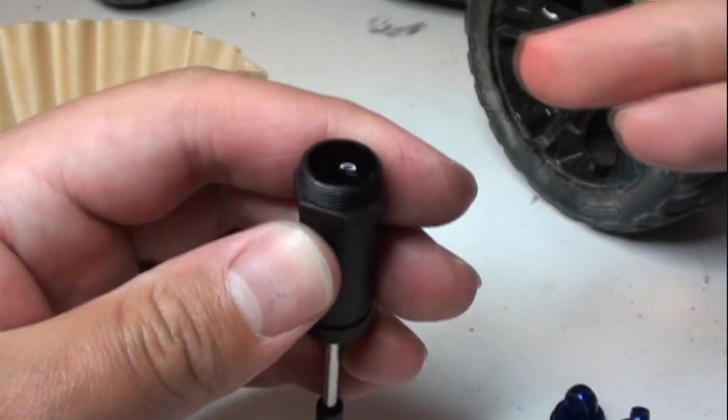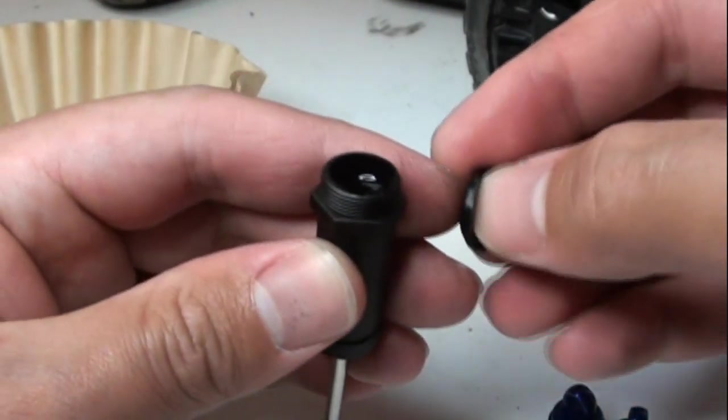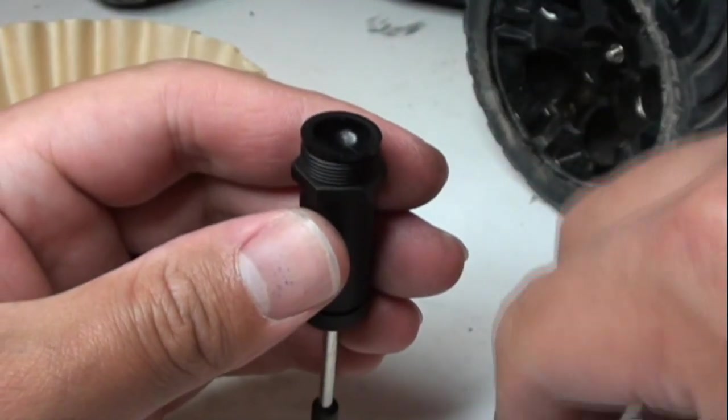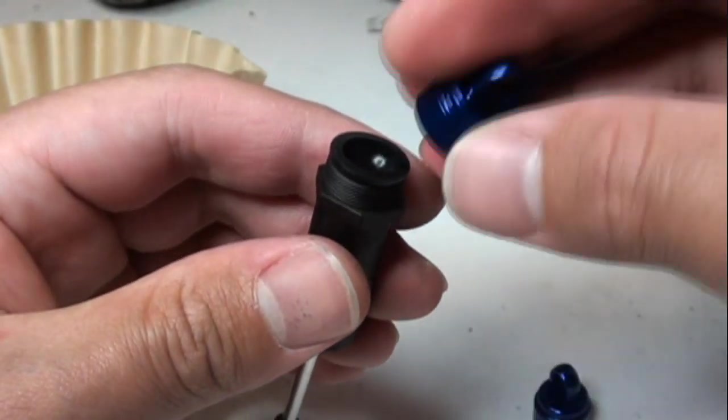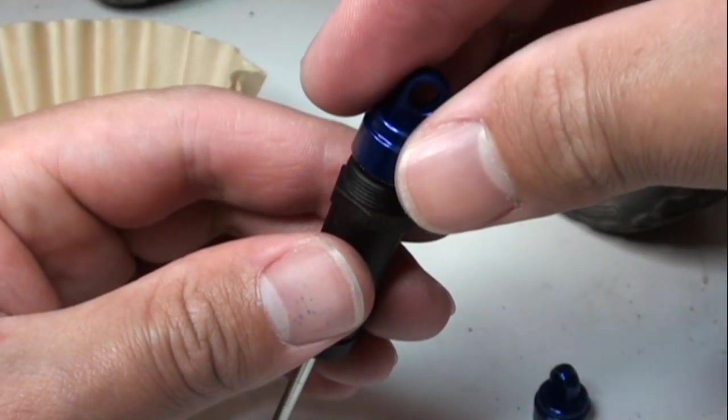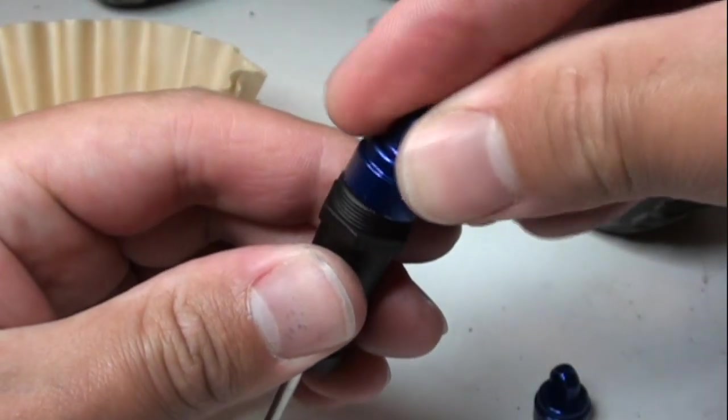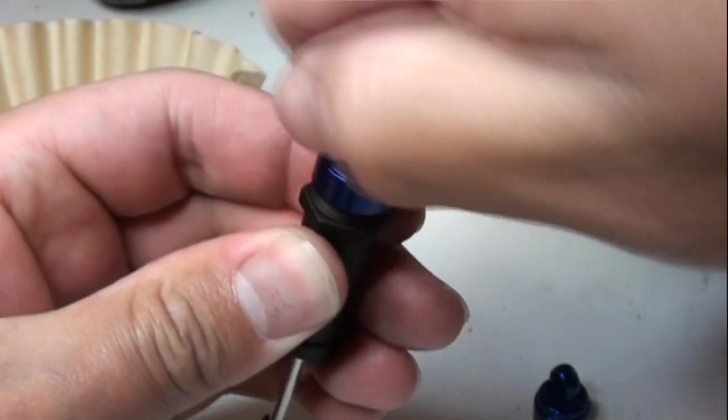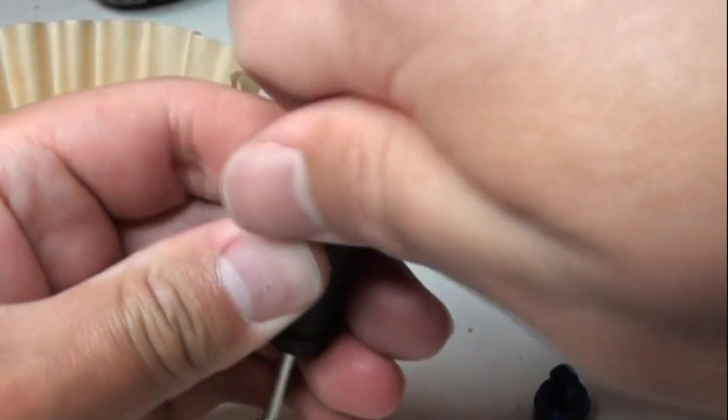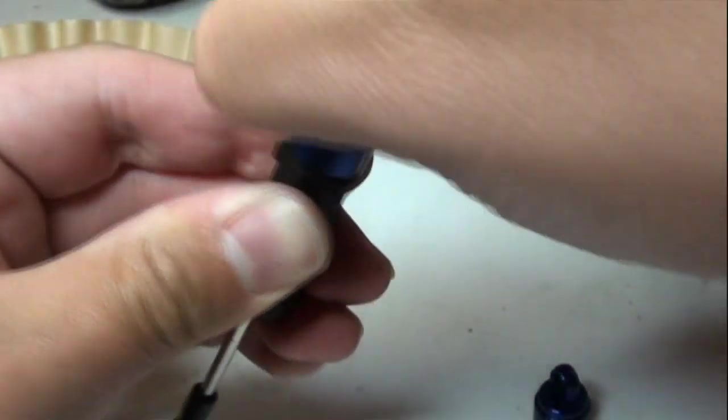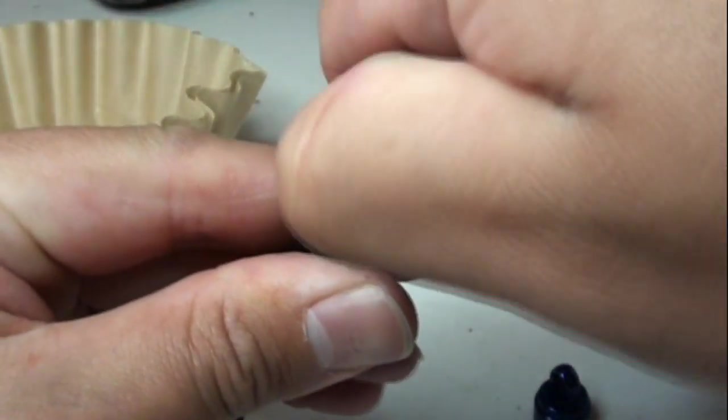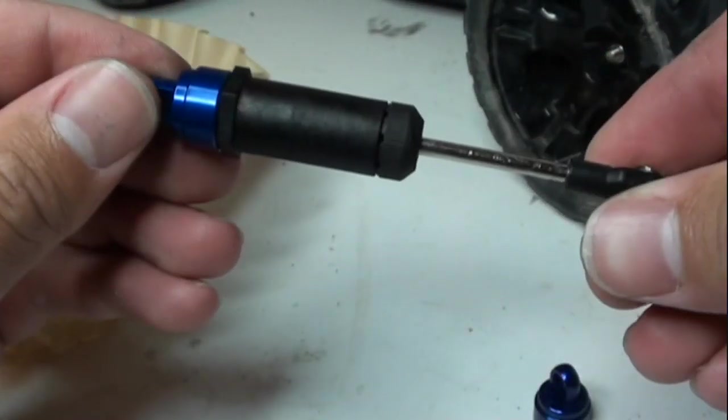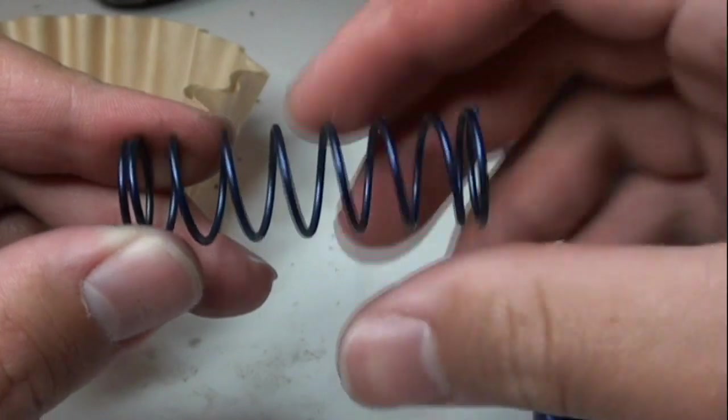Now for the fun part, get the little rubber seal, put that on. Get the new aluminum shock cap cover, put that on there, simple as screwing it on. Make sure it's good and tight. Voila, beautiful isn't it?